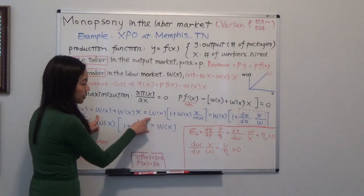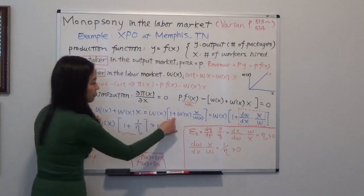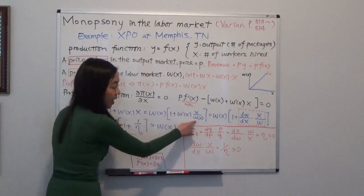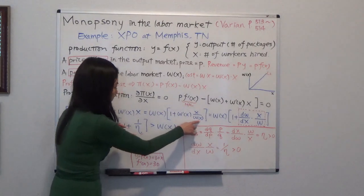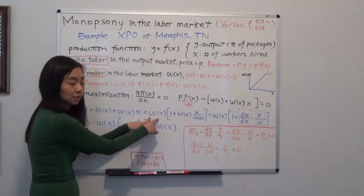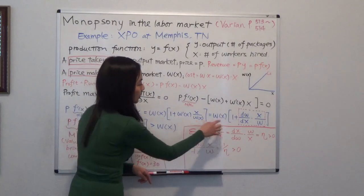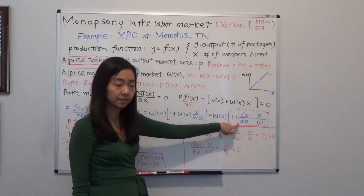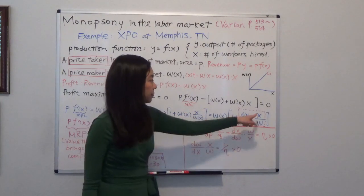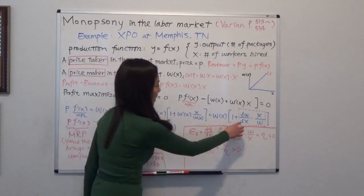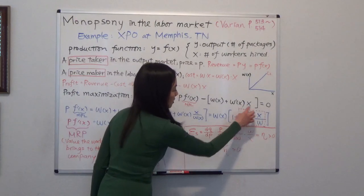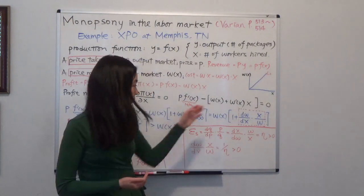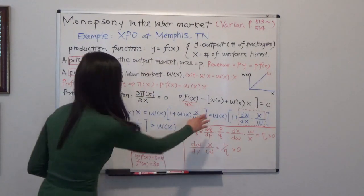And the next step, I'm going to take out W(X). And inside the bracket, we'll get 1 plus W'(X) times X divided by W(X) because I'm pulling that out. So what do I get here? Eventually, I get 1 plus, what is W'(X)? That's just dW/dX and X over W. And notice that later on, I'll show you this term really is the reciprocal of the labor elasticity of supply. I'm going to show you later.